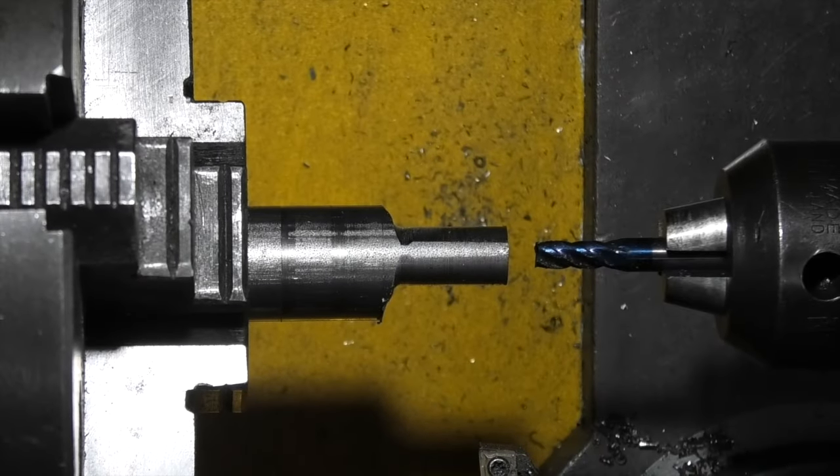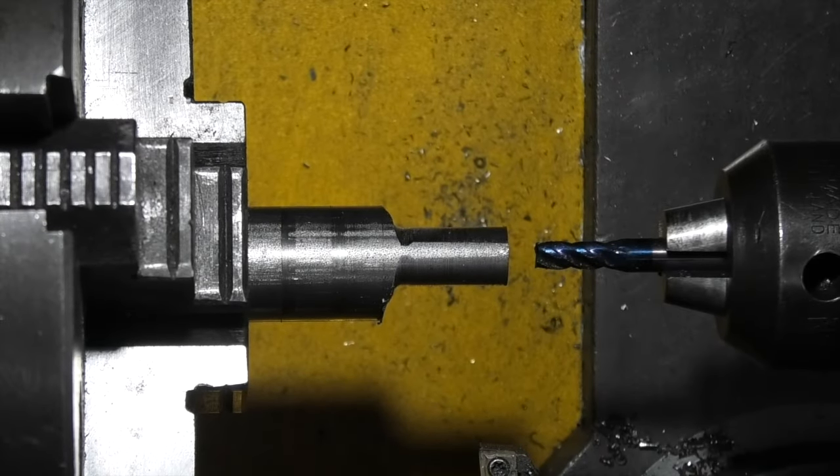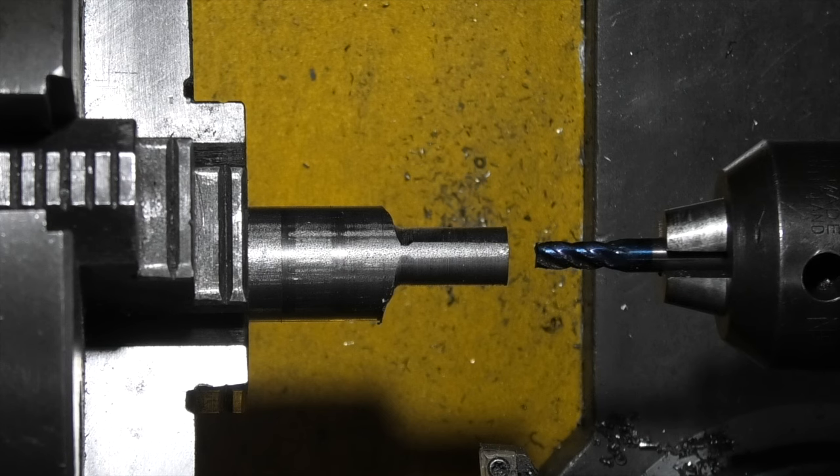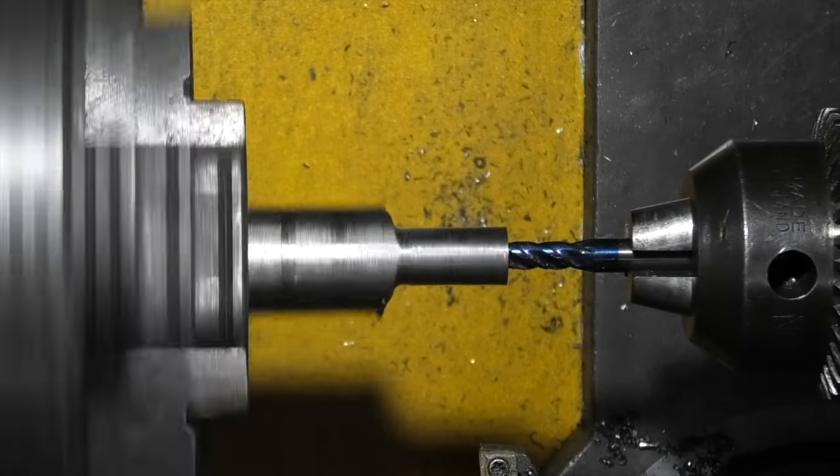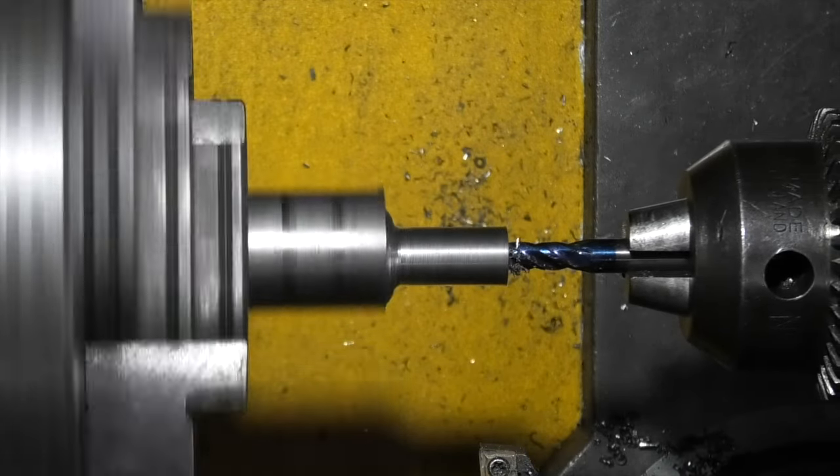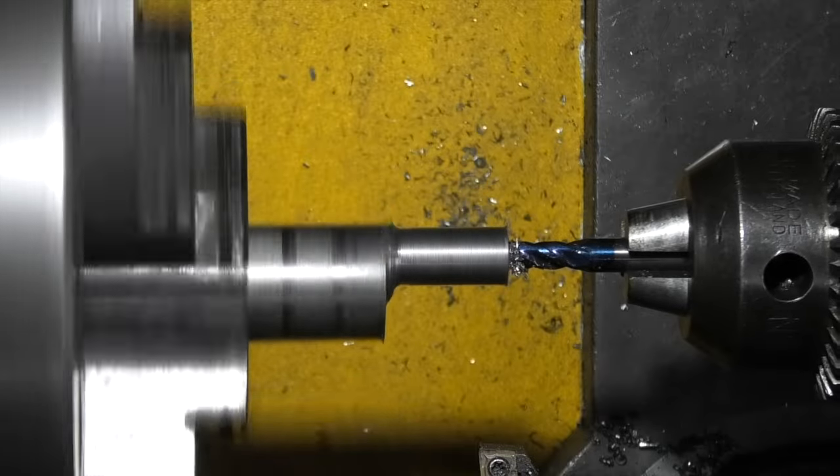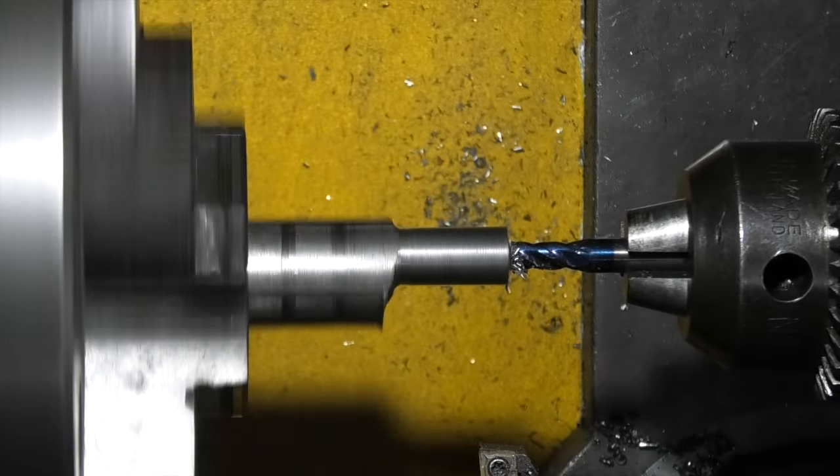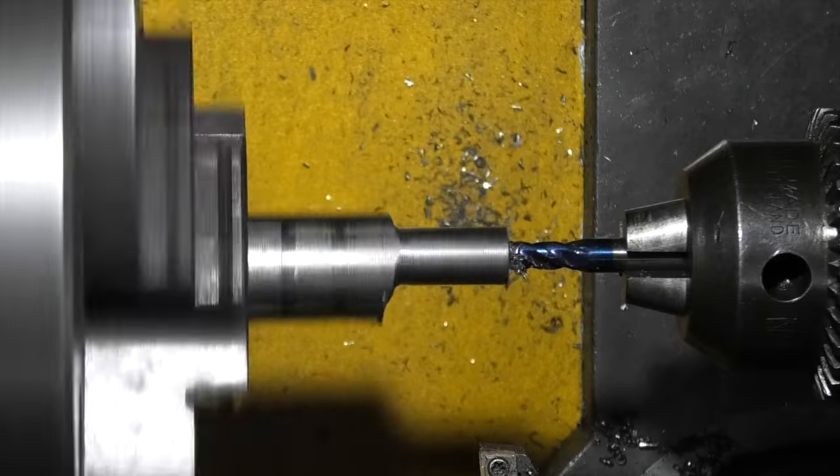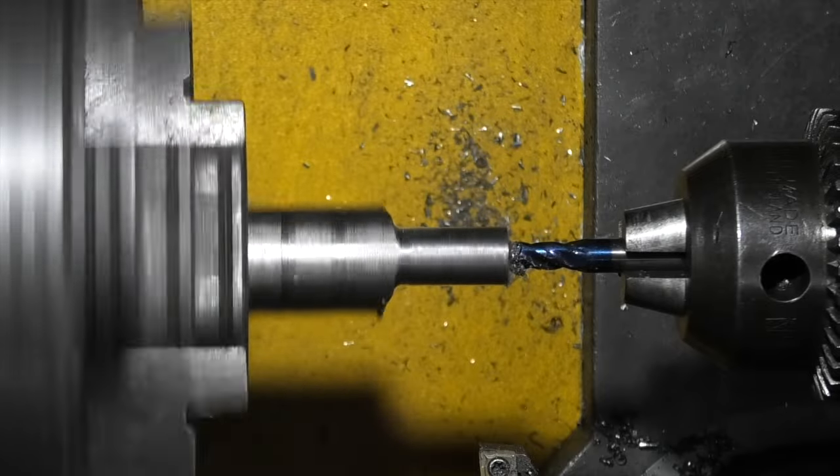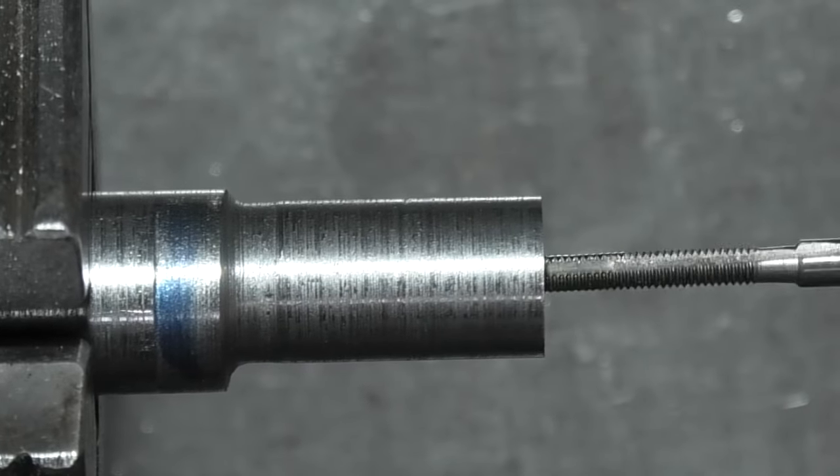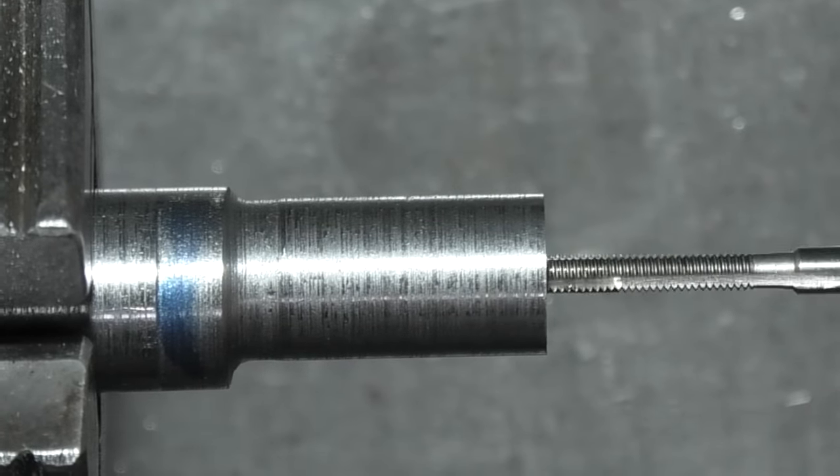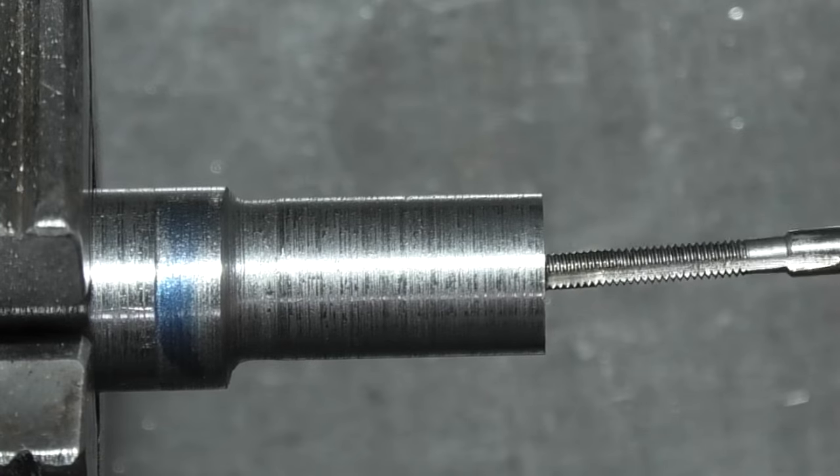Now I need to create the pocket for the carbide tip. I've taken a six millimeter end mill. I'll go in to a depth of three millimeters. I've tapped this hole 2.5 millimeters.